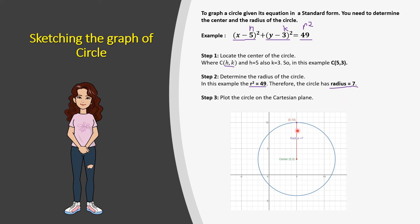As you can see, this is the line representing the radius. When we plot it on the Cartesian plane, this is our circle.